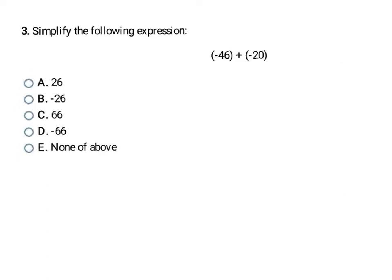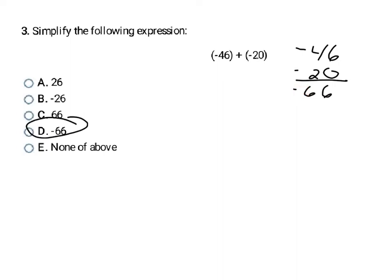Here's another problem and I'm still adding. I'm going to look to see if I have same signs or opposite signs. This number is negative and this number is negative — so I have the same signs. I'm going to add those numbers: 46 plus 20 gives me 66. They were negative numbers, so my answer is also going to be negative. When adding with the same sign, your answer has that same sign. So my final answer is negative 66, which is D.